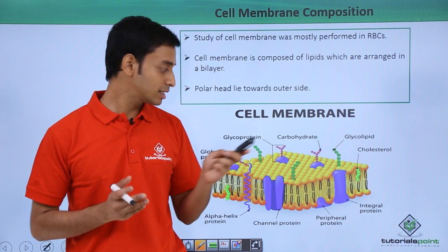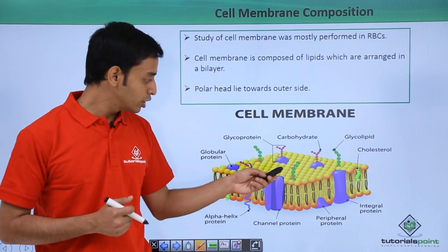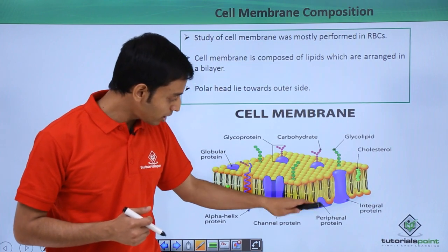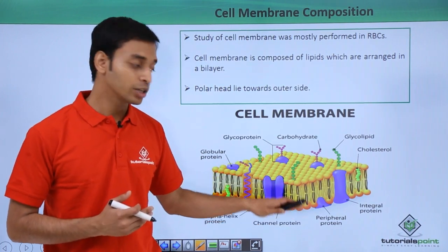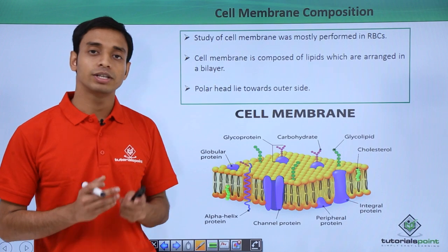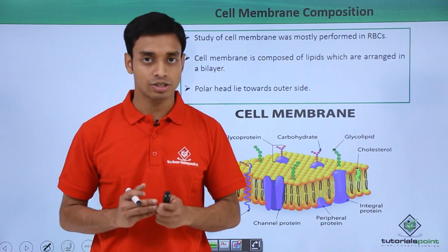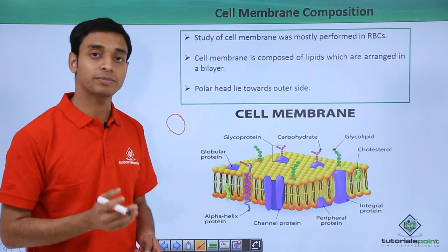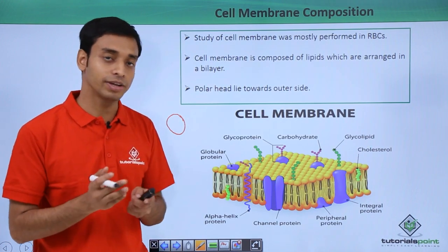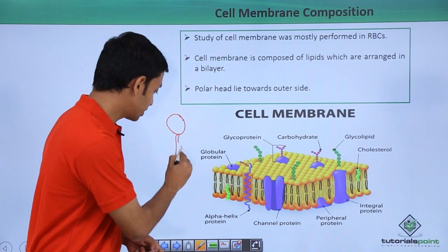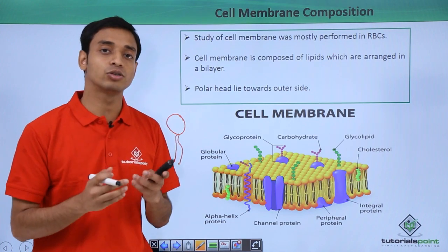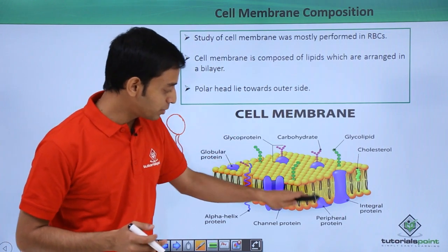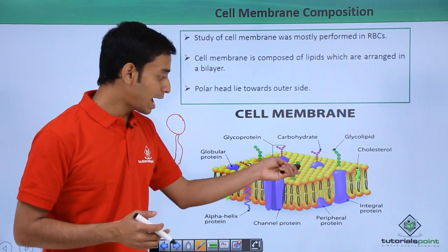To understand the structure of the bilayer, let us concentrate on this picture. You can see the yellow basic layer — these are made up of lipids forming a bilayer. These lipids have two basic structures: a head which is polar and hydrophilic, meaning water-loving, and a tail which is hydrophobic, meaning non-polar and water-fearing.